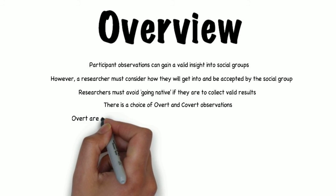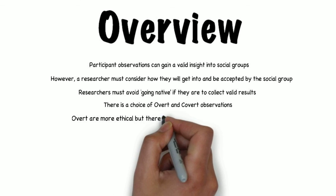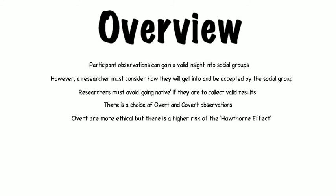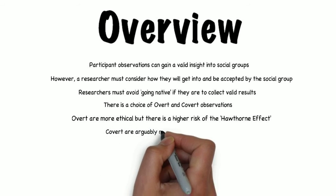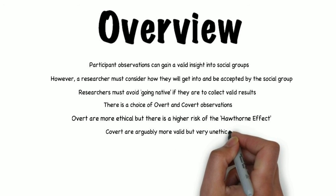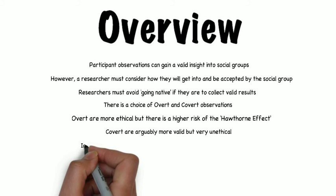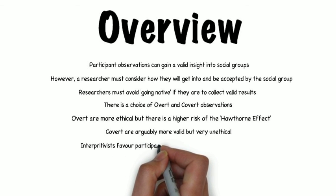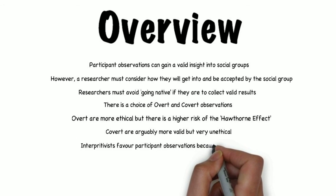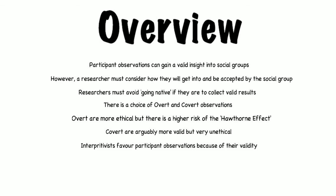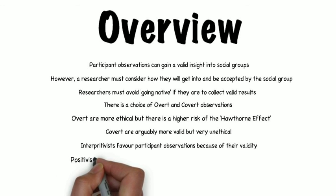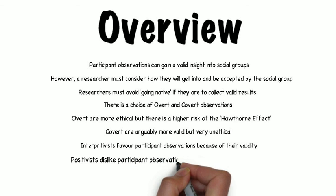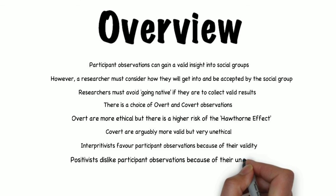The researcher must also decide whether their observations will be overt or covert. Overt observations are more ethical and practical but there is a higher risk of being refused entry and producing the Hawthorne effect. Covert observations are the opposite — believed to produce the most valid and true-to-life results, but are very unethical and impractical. Participant observations as a whole are favoured by interpretivists because they are valid, gain more insight, and are flexible, leading to findings grounded in real life. However, positivists do not like this method as results are not reliable and there is too much focus on the micro level and not enough on the macro — the wider structural factors.